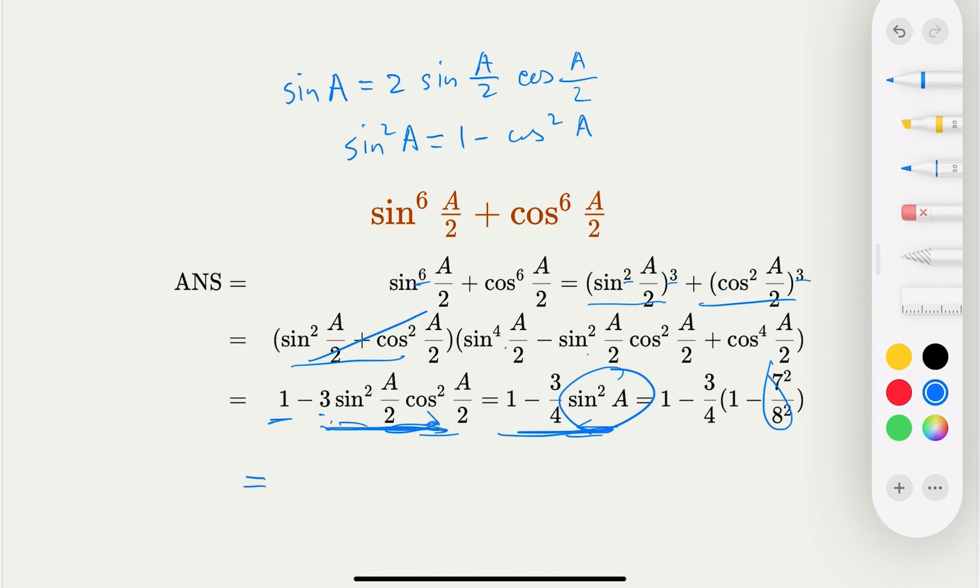And then, earlier, we already find out cosine A and sine square of A, of course, is equal to 1 minus cosine square of A. So just plug in 1 minus 7 over 8 squared, we found earlier. So if you do this, the final answer would be, let's plug in. So 1 minus 3 over 4, this is going to be 1 minus (64 minus 49) over 64. So that's equal to 1 minus 3 times 15 over 256. So this is 256 minus 45, which is 211 over 256. That would be the answer.